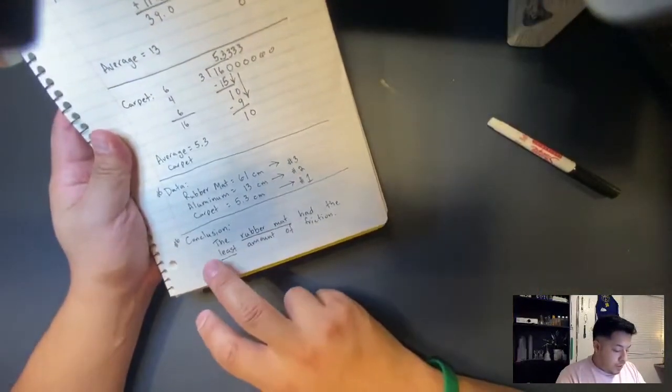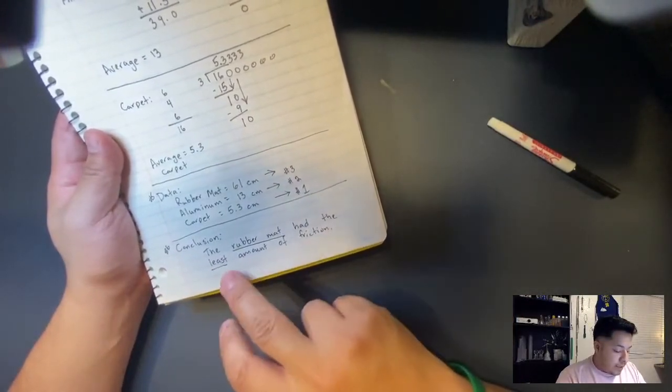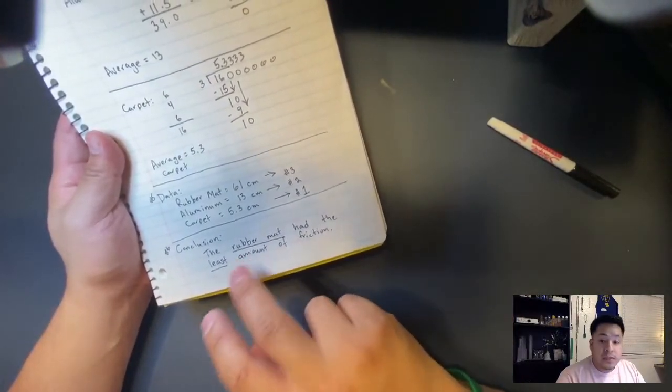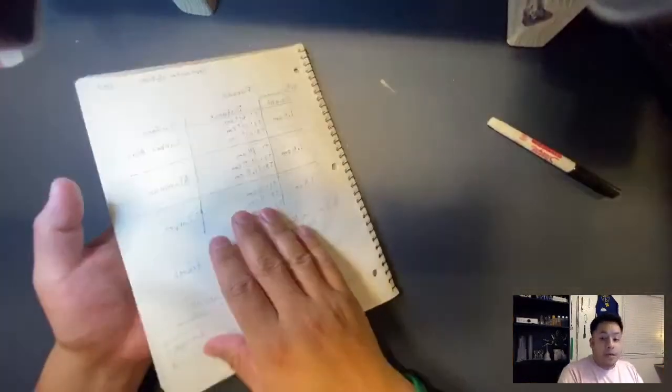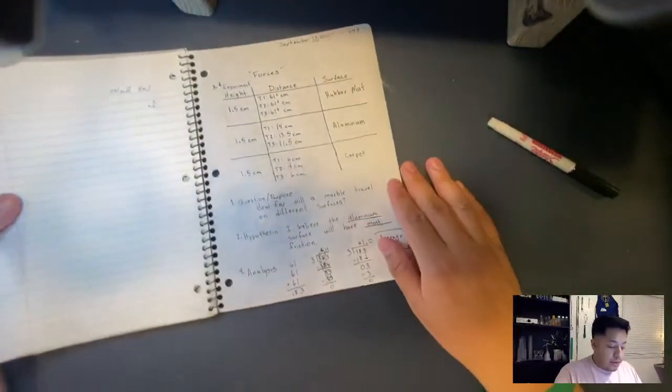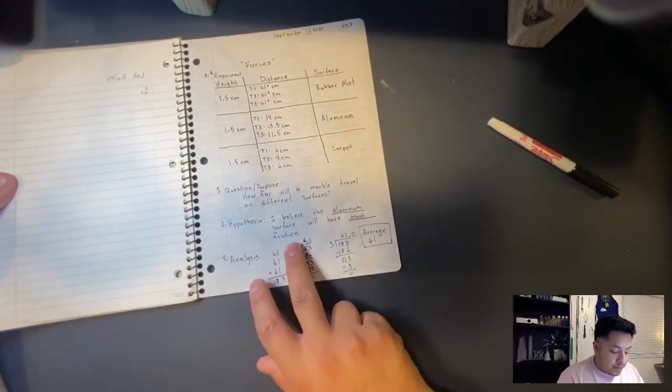So the conclusion was, and this is a true statement, the rubber mat had the least amount of friction. This is a true statement. Now, let's go back to your hypothesis. Was your hypothesis correct?